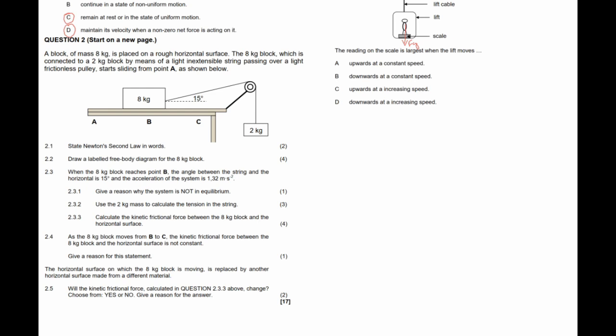The question reads: the reading on the scale is largest when the lift moves... In order for this reading to be as large as possible, the tension in the rope must be far greater than the force of gravity pulling downward. A tension force greater than the force of gravity results in a net upward force, and therefore an upward acceleration. So the correct option is C — when the lift moves upwards at an increasing speed, meaning upward with a positive acceleration.